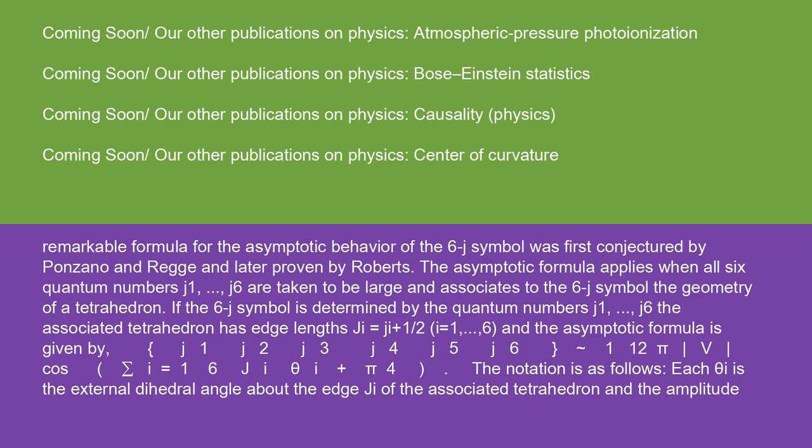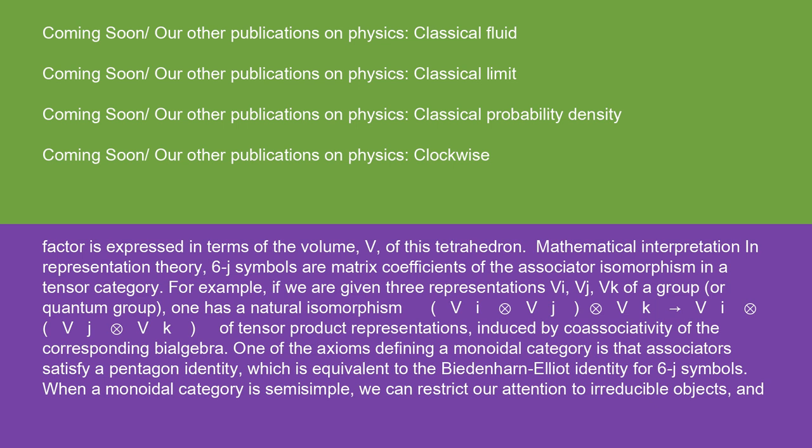The notation is as follows: Each θI is the external dihedral angle about the edge ℓI of the associated tetrahedron, and the amplitude factor is expressed in terms of the volume V of this tetrahedron. Mathematical interpretation in representation theory: 6J symbols are matrix coefficients of the associator isomorphism in a tensor category. For example, if we are given three representations VI, VJ, VK of a group or quantum group, one has a natural isomorphism from (VI ⊗ VJ) ⊗ VK to VI ⊗ (VJ ⊗ VK) of tensor product representations, induced by coassociativity of the corresponding bialgebra. One of the axioms defining a monoidal category is that associators satisfy a pentagon identity, which is equivalent to the Biedenharn-Elliott identity for 6J symbols.